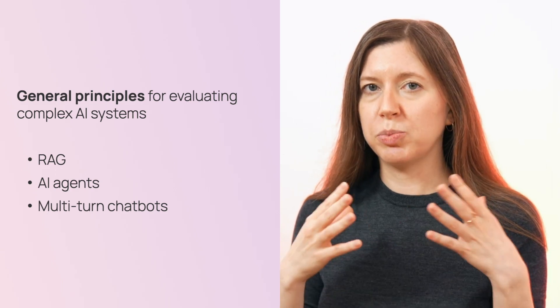Today we're going to talk about a big topic: how to evaluate complex AI systems. Until now we mostly talked about systems that look like an input and an output, for example summarization or simple question-answering systems. But many AI applications are much more complex than that — for example, agents and chatbots. So how can you evaluate those? In this video we're going to cover a few general principles.